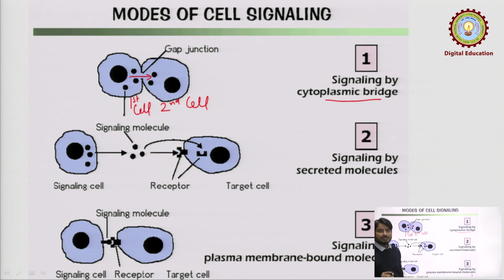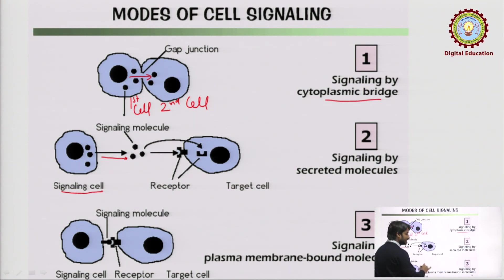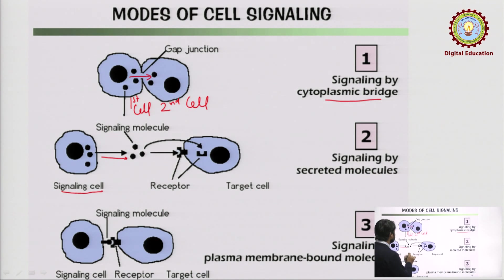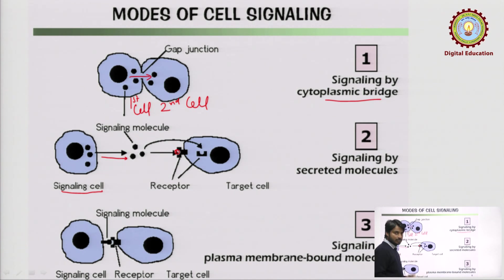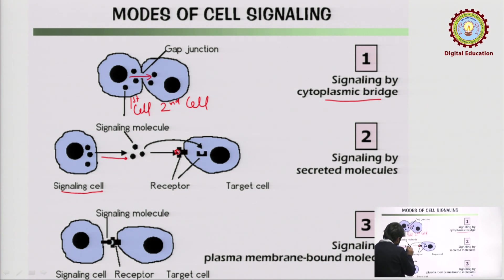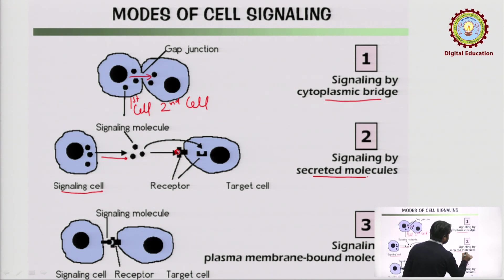The next is signaling by releasing a signal molecule. A cell — the signaling cell — releases a molecule. There are specialized target cells for this signal molecule, and the signal molecule will bind to receptors specific to those signals. This circular signal will bind to the receptor gap, cause a conformational change, affect another protein, and the effector protein will transmit that signal intracellularly. When a cell releases a signal molecule and it binds to another target cell via receptor, this is called signaling by secreted molecule.